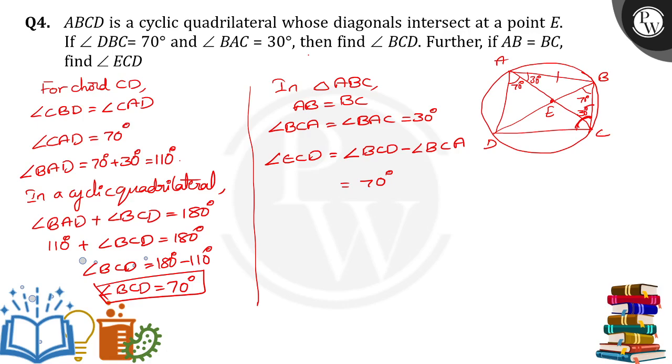Here, angle BAD is 70 plus 30. This is equal to 100 degrees. So, we will get BCD is equal to 80. So, 80 minus 30 degrees. So, we will get 50 degrees. Angle ECD is equal to 50 degrees. Thank you.